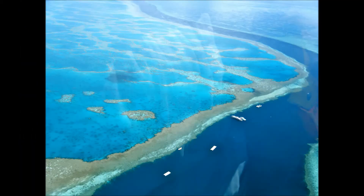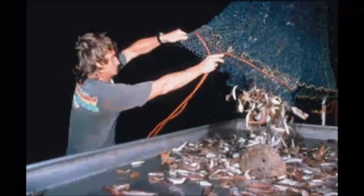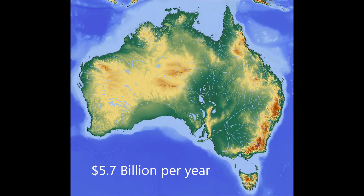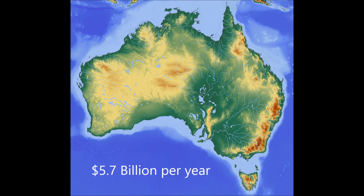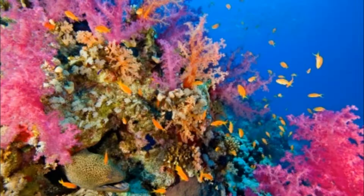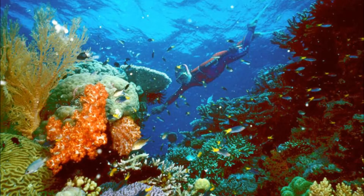The Great Barrier Reef is used for many industries such as recreation, tourism, commercial fishing and research, which accounts for $5.7 billion per year in Australia's economy. The future of the Great Barrier Reef is decided by the actions taken to restore water quality and increase coral richness. Overall, if the programs and strategies to overcome the detrimental problem of agricultural runoff are implemented, the Great Barrier Reef has the potential to improve in health.